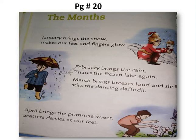Now I will explain these four couplets. In this poem, the poetess is talking about the 12 months of the year. First she talks about January, in which it is very cold due to snow, so our body parts feel frozen. In February, rain melts the frozen lakes, making puddles everywhere. In March, wind makes loud sounds and flowers move like they are dancing. In April, primrose and daisy flowers bloom and fall to the ground at our feet.